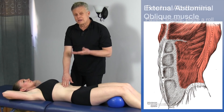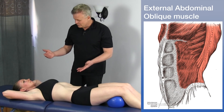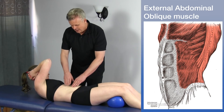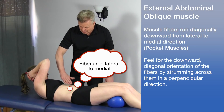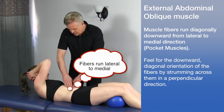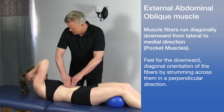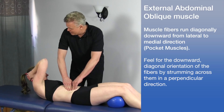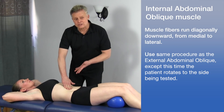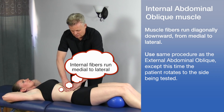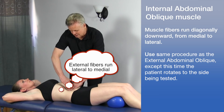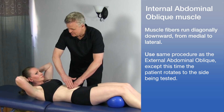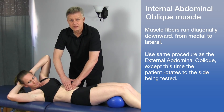For the external oblique, have the patient come up into flexion and then reach to the opposite side. Because these are the pocket muscles with a diagonal fiber orientation, you can get in there and palpate them well. For the internal oblique, which is deep to the external oblique with fibers wrapping in the opposite direction, have the patient flex and rotate toward the same side — the muscle pops right up underneath the hand.